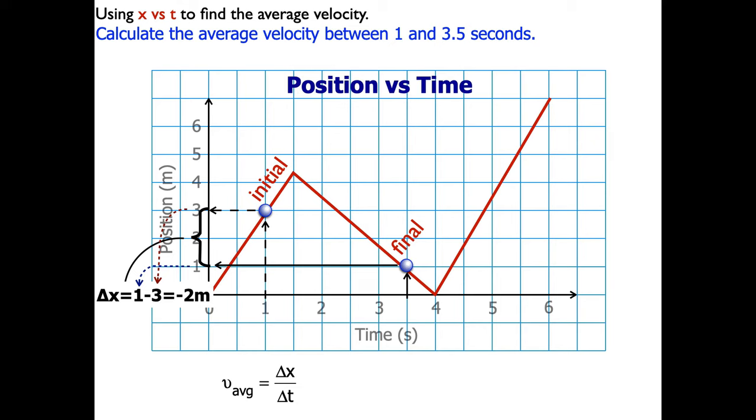The time is given in the question, 3.5 minus 1 second. So it's that range right there. So the change in time is 3.5 minus 1, which is 2.5.